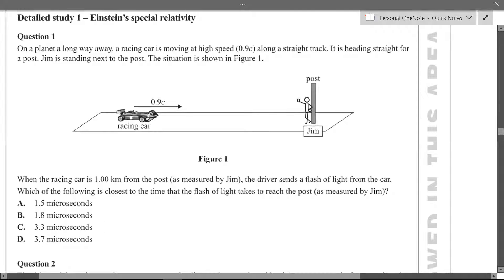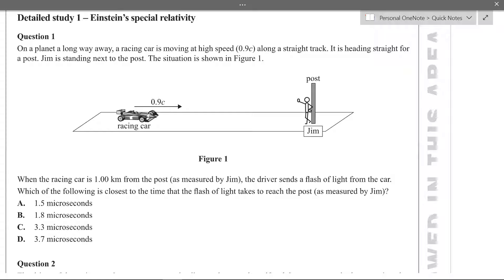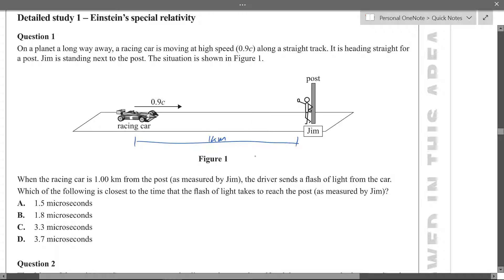I think it's moving this way and headed straight for the post. So this is one kilometre away measured by Jim. So if it's measured by Jim, Jim's at rest compared to the distance. So one kilometre is the proper length and this guy sends a flash of light from the car. What's the closest time that it takes the flash of light to reach the post as measured by Jim?